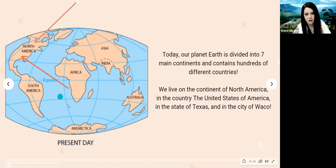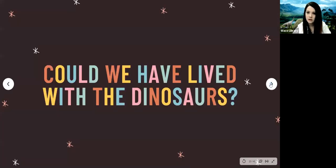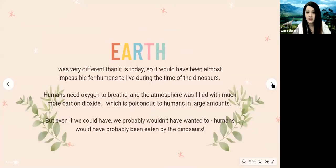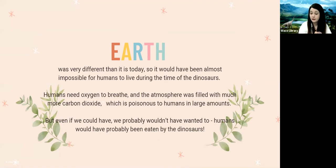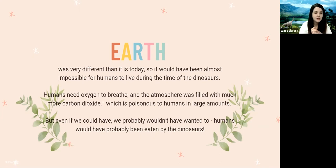You can see the arrows here pointing towards North America and towards Texas, where we live. Now here's a good question — could we have lived with the dinosaurs? The answer is that earth was very different than it is today, so it would have been almost impossible. Humans need oxygen to breathe, but the atmosphere was filled with much more carbon dioxide, which is poisonous to humans in large amounts. And even if we could breathe, humans probably would have been eaten by the dinosaurs.